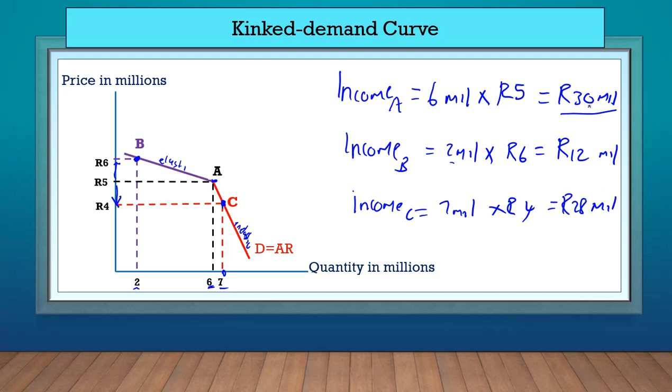So even if they reduce the price, they will end up making less than they would have if they just stuck to the equilibrium position. This proves that it doesn't make sense for oligopoly firms to compete using price. They cannot compete on price because they will end up hurting themselves.